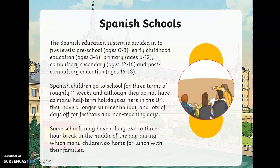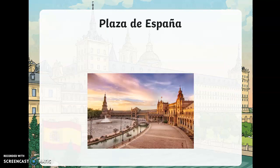Now let's look at Spanish schools. The Spanish education system is divided into five levels: preschool from 0 to 3, early childhood education from 3 to 6, primary school from 6 to 12, compulsory secondary from 12 to 16, and post-compulsory secondary from 16 to 18. It's very similar to our school system. Spanish children go to school for three terms of roughly 11 weeks. They have a longer summer holiday and lots of days off for festivals. Some schools have a long two or three hour break in the middle of the day, during which many children go home for lunch with their families.